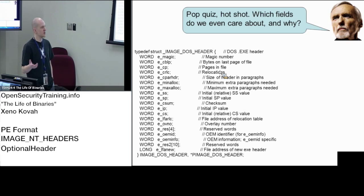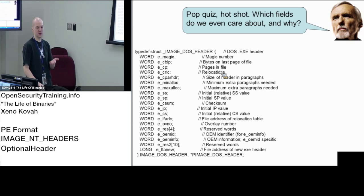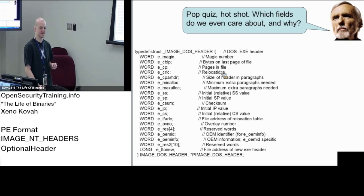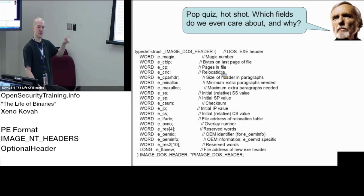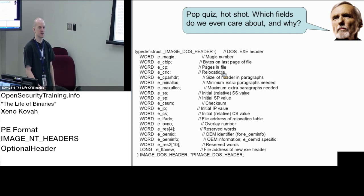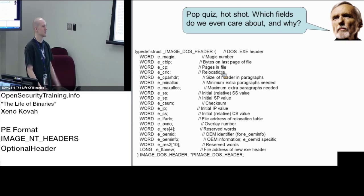The magic number tells the loader this is an executable file. For the DOS header magic, the value is MZ — if the OS loader doesn't see MZ there, it says 'this isn't an executable file, I don't need to process it.' The other field we care about is e_lfanew — it gets us to the next data structure, the NT headers data structure.